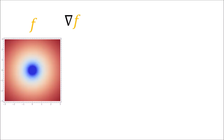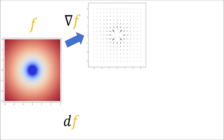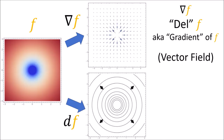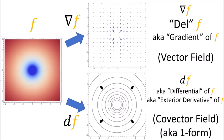Both the gradient operator and the d operator act on scalar fields. The difference is that the gradient of a scalar field gives us a vector field where the vectors point in the direction of steepest increase, with larger vectors indicating a steeper change. On the other hand, df gives us a covector field, also called a one form, where the covector curves are given by the level sets of the function f, and the level sets are oriented towards the positive values of f. So del f is a vector field and df is a covector field.